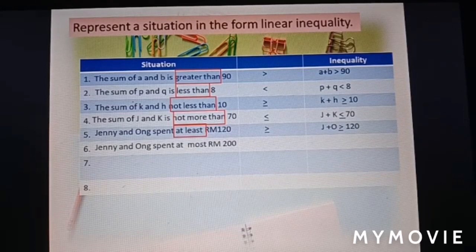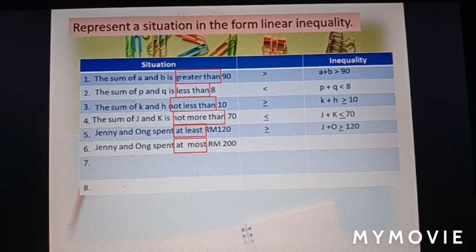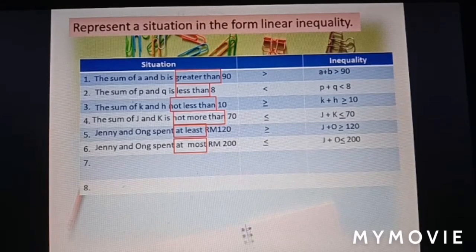Jenny and Ann spend at most 200 ringgit. The keyword is 'at most,' which means maximum. So they can spend 200 or less than 200 ringgit. The inequality is: j plus n ≤ 200.